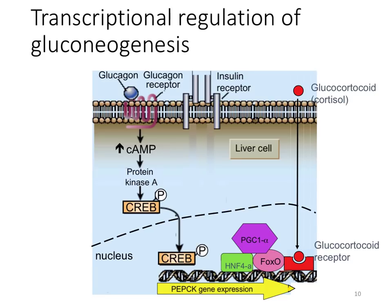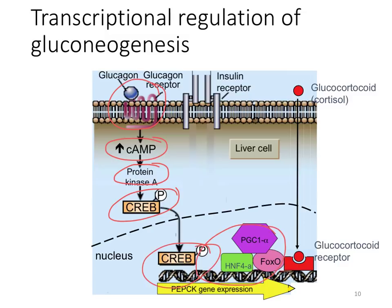This cartoon depicts how glucagon signaling activates the transcription of the gluconeogenic enzyme PEPCK. When glucagon binds its receptor, this activates a G-protein, which activates adenylate cyclase, which makes more cyclic AMP, which binds to and activates protein kinase A, which phosphorylates many proteins including the transcription factor CREB. When CREB is phosphorylated, it moves into the nucleus and binds to the transcriptional regulatory element of the PEPCK gene. Additionally, the glucocorticoid steroid hormone binds the glucocorticoid receptor, which is also a transcription factor. When all these elements are bound together, we have maximal stimulation of PEPCK gene expression. The other gluconeogenic enzymes are stimulated in a very similar fashion.